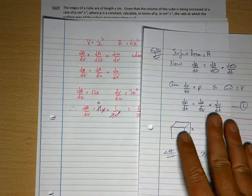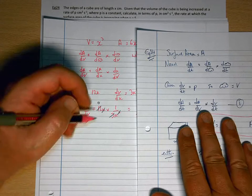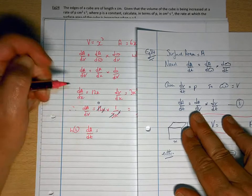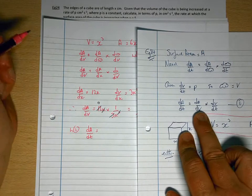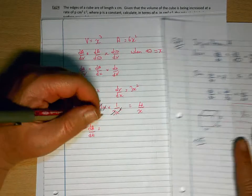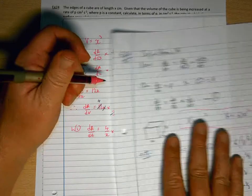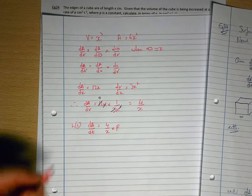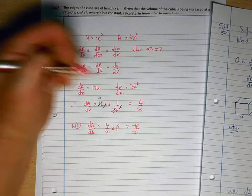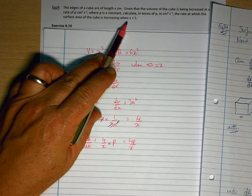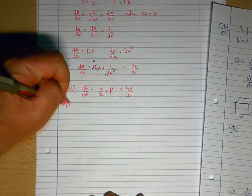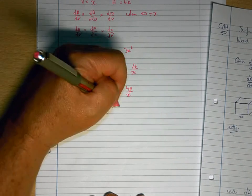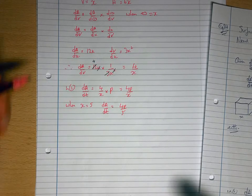So going back to where we started in equation 1, dA/dt equals dA/dV, which we now know is 4 over x, multiplied by dV/dt, which we know is p. So that's going to be 4p over x. And then at the particular instant where x equals 5, dA/dt would be 4p over 5, which is what we arrived at the other way.